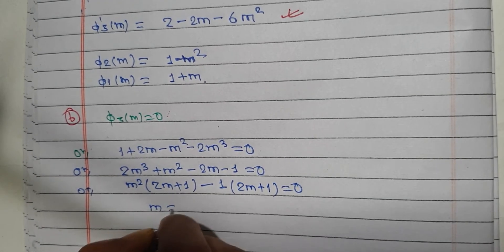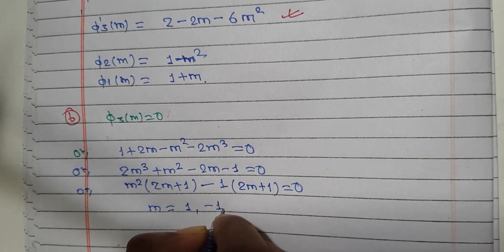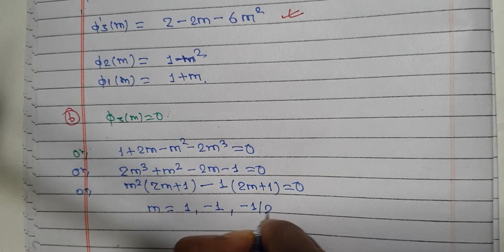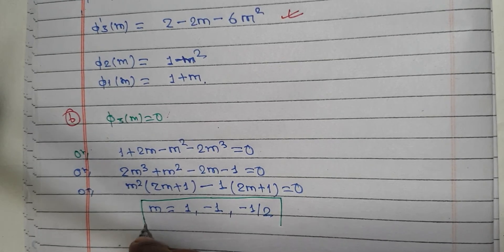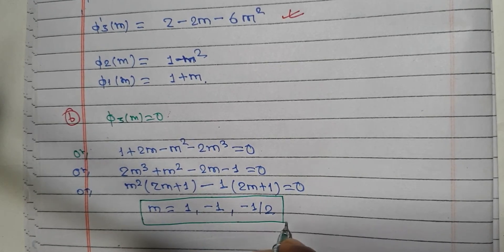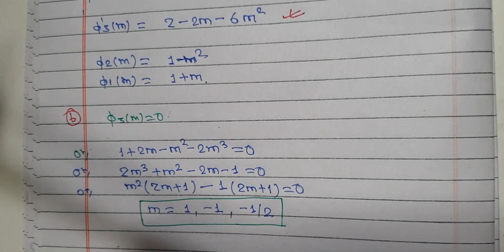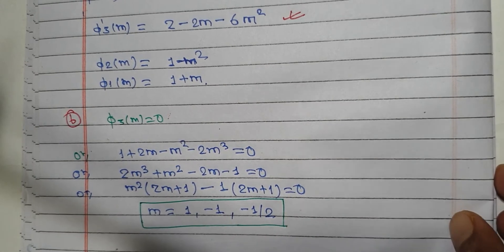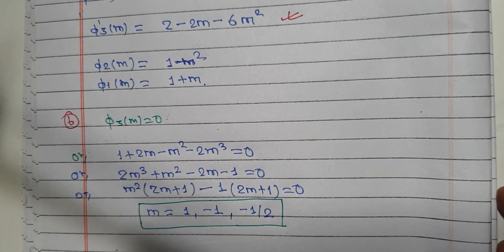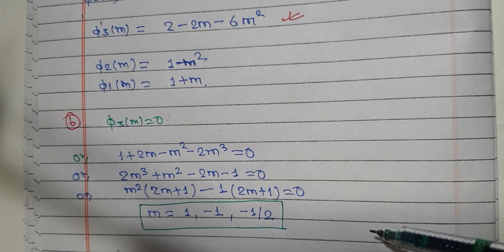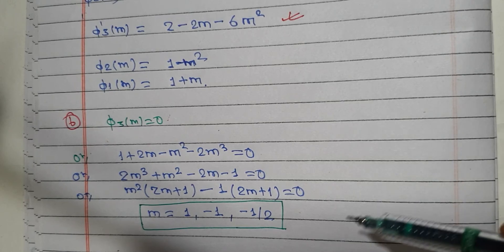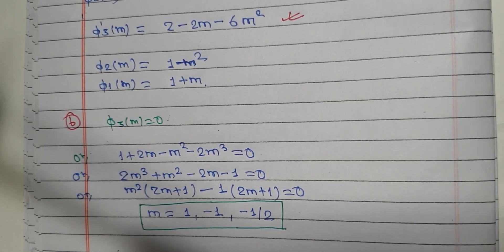So m is equal to minus 1, minus 1, and minus 1 by 2 — three values. m equals 1: the first value gives y equals 2mx plus 1 put in order. Second time again, m equals 1.